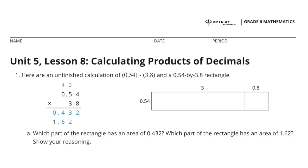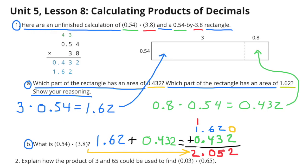Unit 5 Lesson 8, Calculating Products of Decimals. Number 1: here are an unfinished calculation of 54 hundredths and 3 and 8 tenths, and a 54 hundredths by 3 and 8 tenths rectangle A.